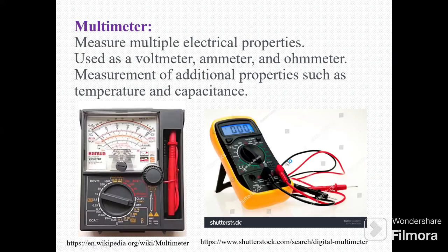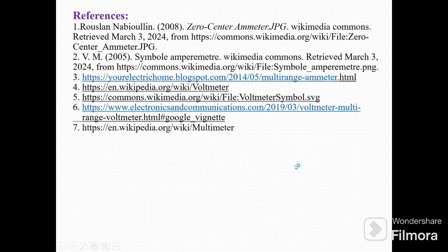The next device is a multimeter. A multimeter measures multiple electrical properties. It is used as a voltmeter, ammeter, and ohmmeter. It also measures additional properties such as temperature and capacitance. Here in this image, see this is a manual multimeter and this is a digital multimeter.